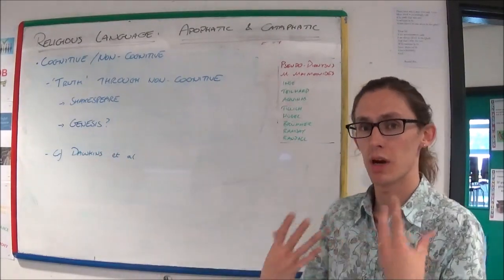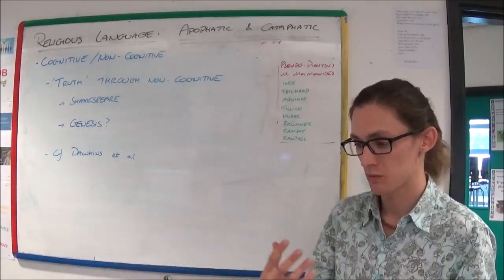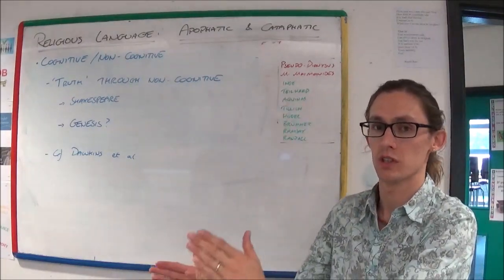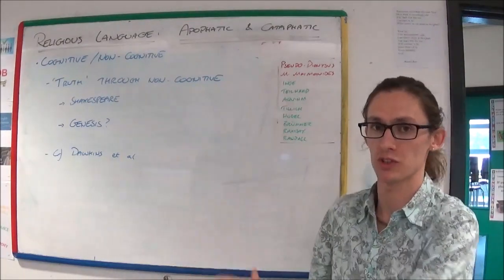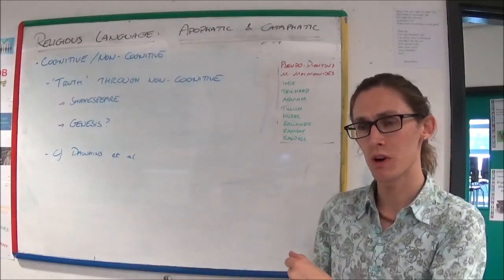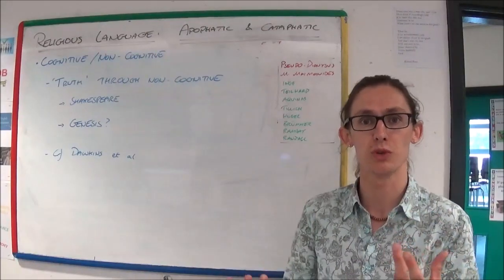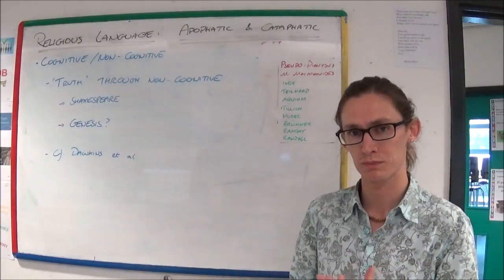Now, people like Dawkins always want to take the Bible and treat it cognitively and say, no, this is false. It's either true or it's false, and it's false. But it's much harder to argue against it if you consider it to be a different form of truth, a non-cognitive truth.